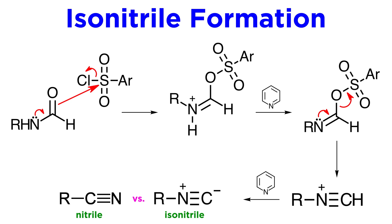Isonitriles are the less stable structural isomers of nitriles. In nitriles, the CN group is bound to an R group through the carbon atom. But in an isonitrile, the R group is bound via the nitrogen atom, so this totally changes things in terms of electron distribution.